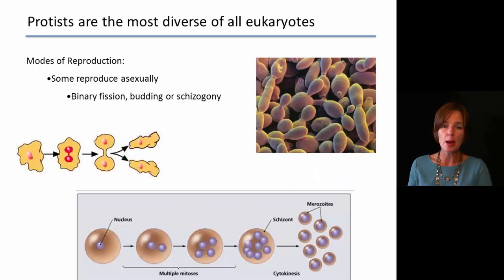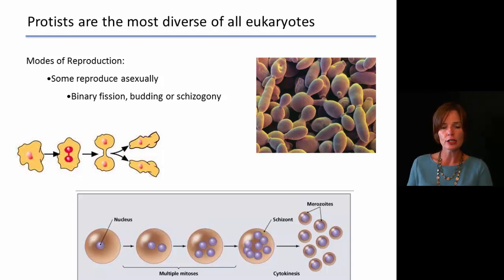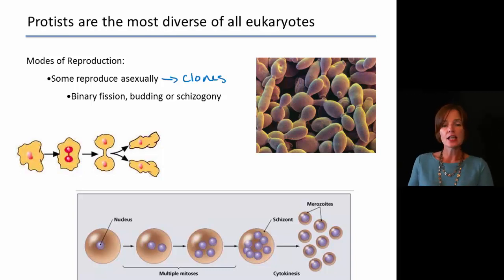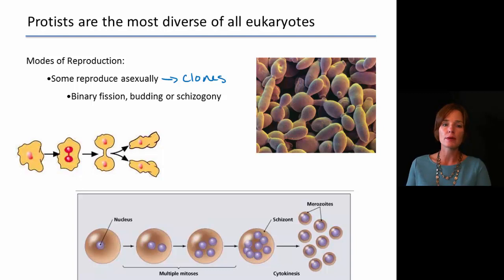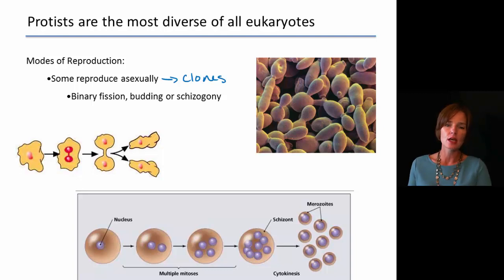We can also talk about their reproduction modes. Some of them reproduce asexually, which results in the production of clones — genetically identical to each other. This process of asexual reproduction is really by mitosis, which produces identical cells. The normal typical mitosis we would call binary fission here, and that's what we see in this first picture.